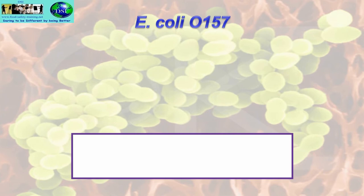E. coli O157 is a particular serotype that causes serious problems, up to serious illness and death. The incubation period is 1–8 days, usually 3–4 days.